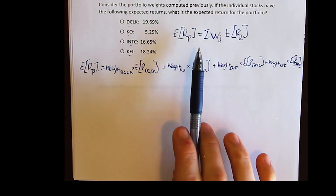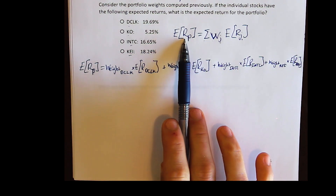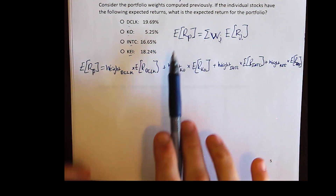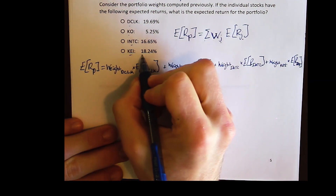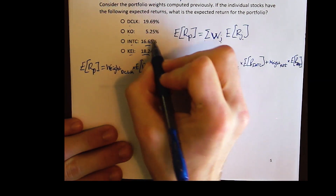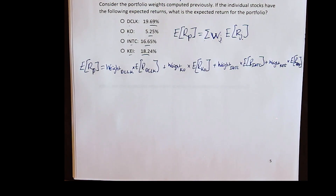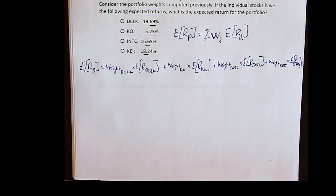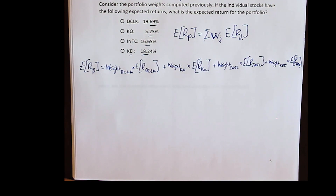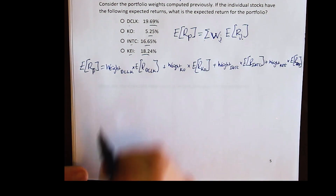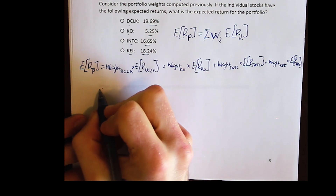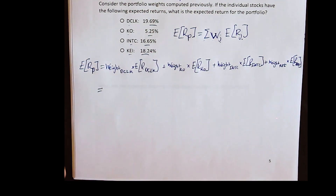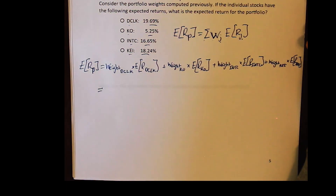This is the appropriate method to calculate the expected return for the portfolio when you already have the expected returns of the assets themselves. Since I'm given the expected returns of each asset, I can use this formula to save time and calculate the portfolio's expected return directly.